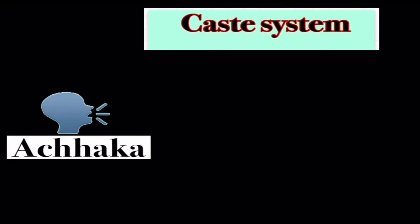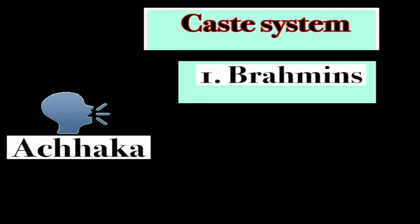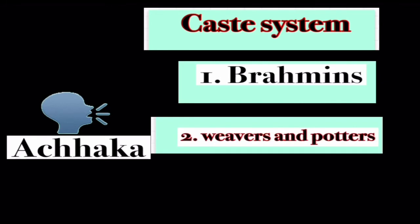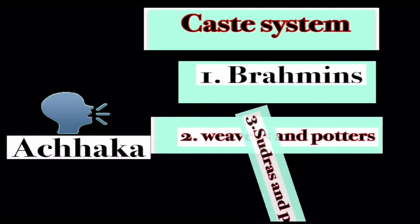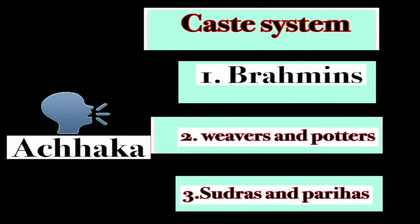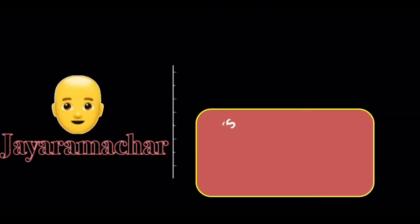At the topmost are Brahmins, who are priests and teachers. On the second level are the weavers and potters. At the bottom are Shudras and Parihas, who mostly perform manual labour and are also known as untouchables. In the opening chapter, there is a famous Harikatha man named Jairamachar. Murthy pays Jairamachar to come to Kanthapura. Harikatha means the story of the Lord. Jairamachar mixes politics with religion, saying Shiva is three-eyed and Swaraj is three-eyed.